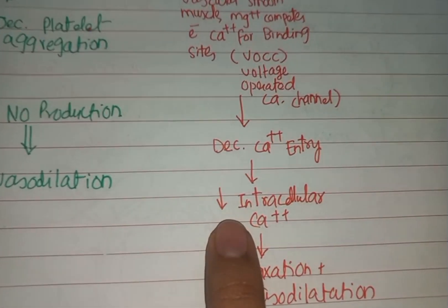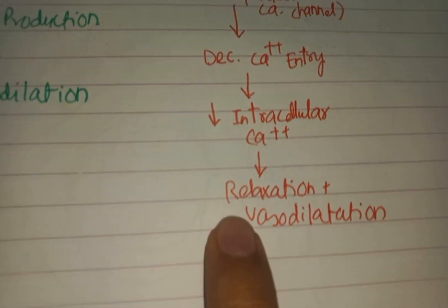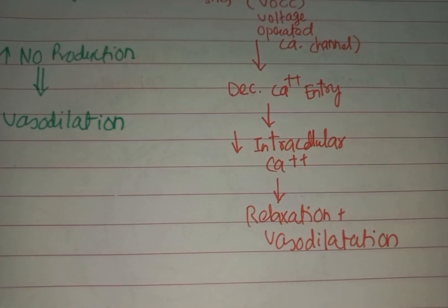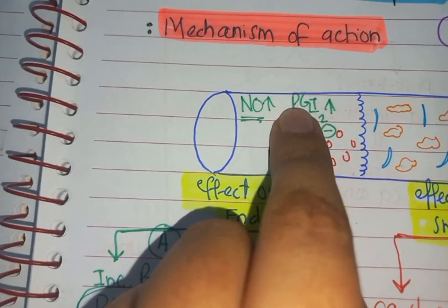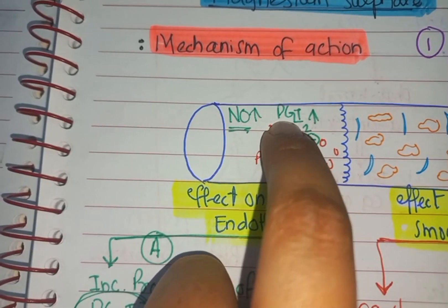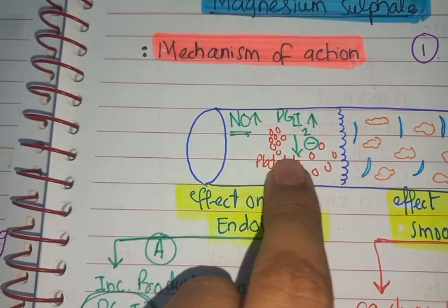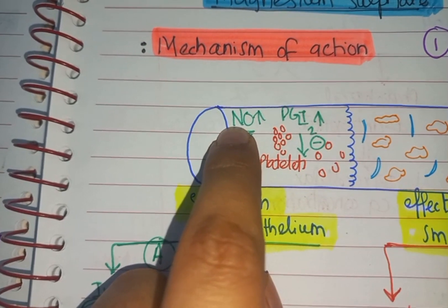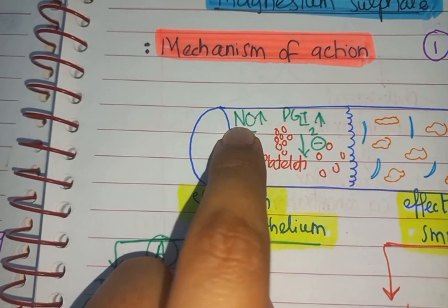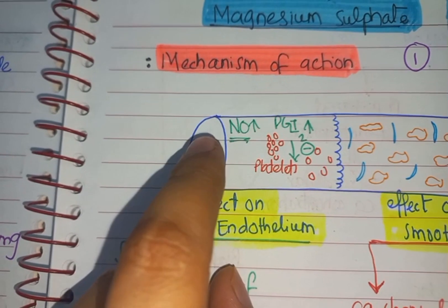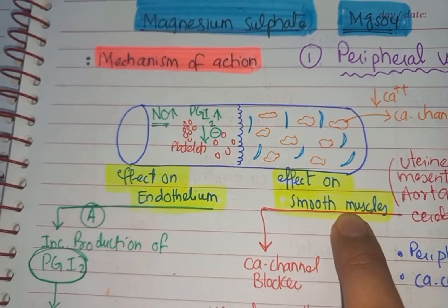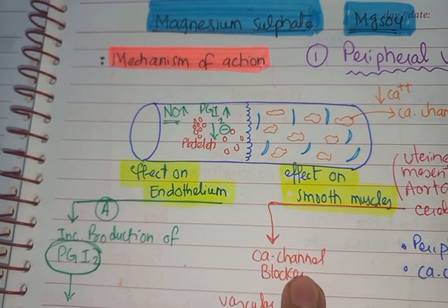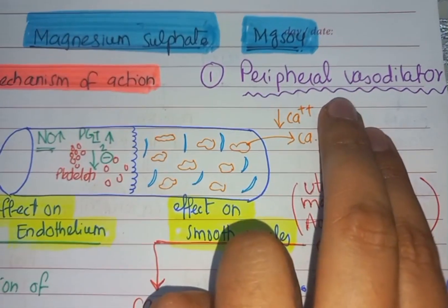There is decreased intracellular calcium, which causes relaxation and vasodilatation. On the other hand, it has an effect on the endothelium — it increases the production of prostaglandin I2, which decreases platelet aggregation, and it increases the production of nitric oxide, which is a vasodilator. So by affecting the endothelium as well as the smooth muscles and blocking calcium channels, it causes peripheral vasodilatation.